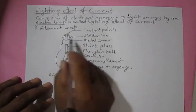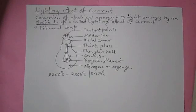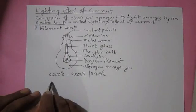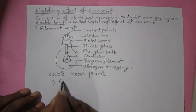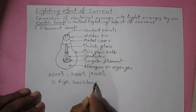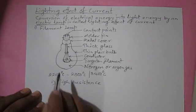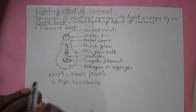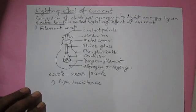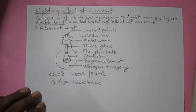Now, focusing on why tungsten is used in a filament lamp: the first reason is that tungsten has very high resistance. We need a material with high resistance that obstructs the flow of current significantly, causing the filament to become white hot. Only a white-hot filament can emit light, so a substance with very high resistance — tungsten — is selected.